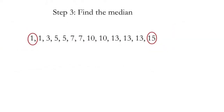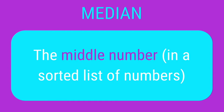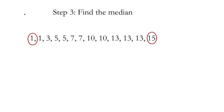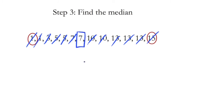Let's move on to step number three: find the median. Median is the middle number in a sorted list of numbers. The best way to do that is to cross off numbers from each end until you're left in the middle — crossing off a small number and a big number, and you just keep going until you're left with one or two numbers. In this case, we're left with a seven. So our median is seven. If there had been two numbers left, like seven and nine, you'd take the average — which would be eight.